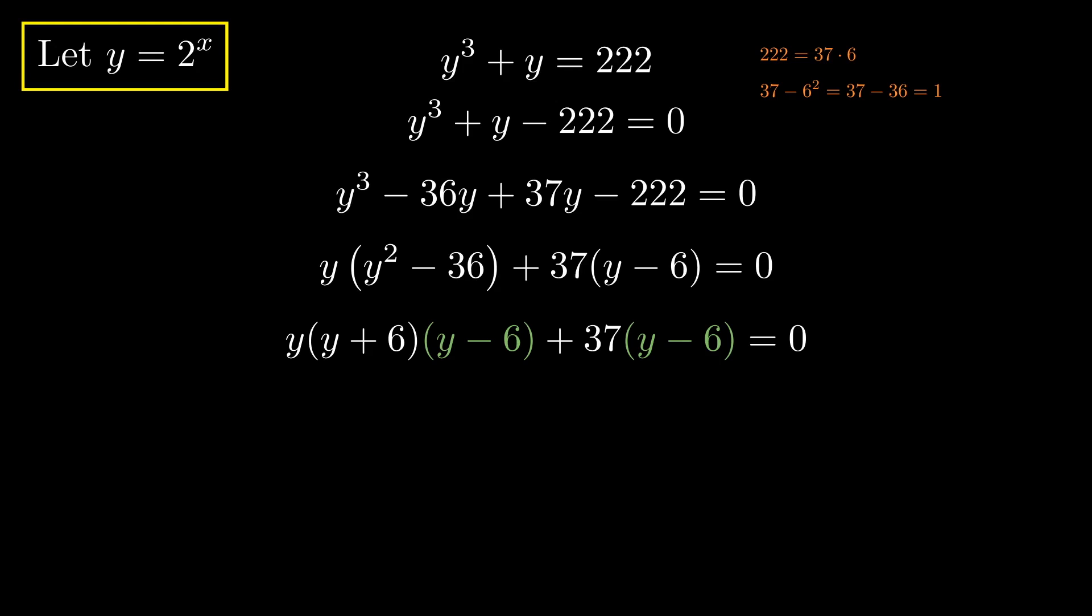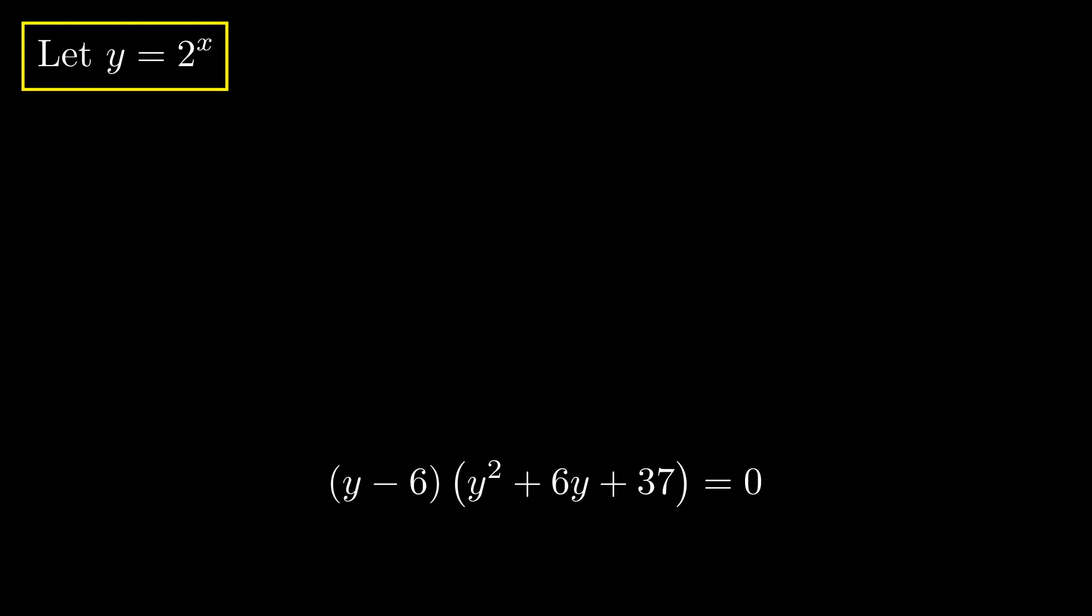There's a factor of y minus 6 in both terms. Now that y minus 6 is a common factor, we can factor that out, and we can even distribute what's left.